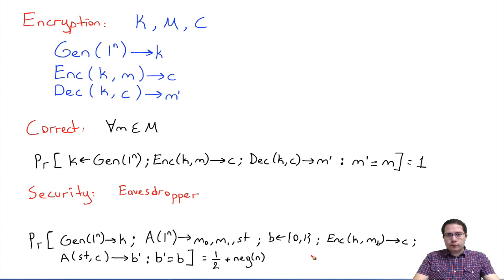Note that for most of the schemes that are used today, the length of the message is not hidden in the ciphertext. Therefore an extra requirement we have is that this m0 and m1 sent by the adversary must have equal length. Because otherwise the adversary can easily win this game with probability 1 actually.